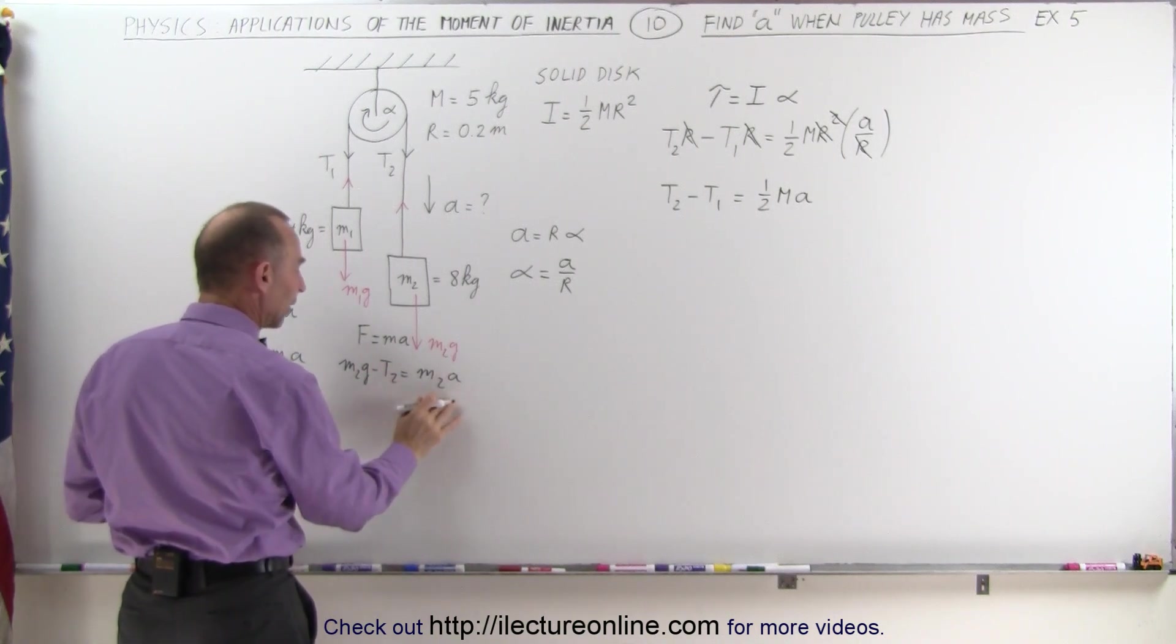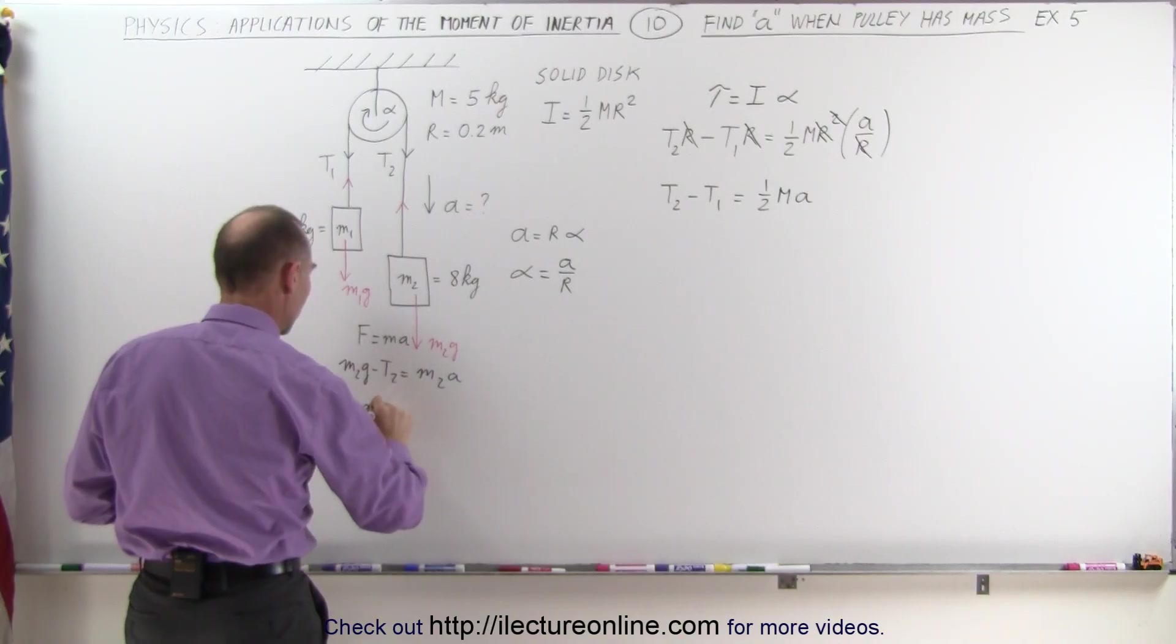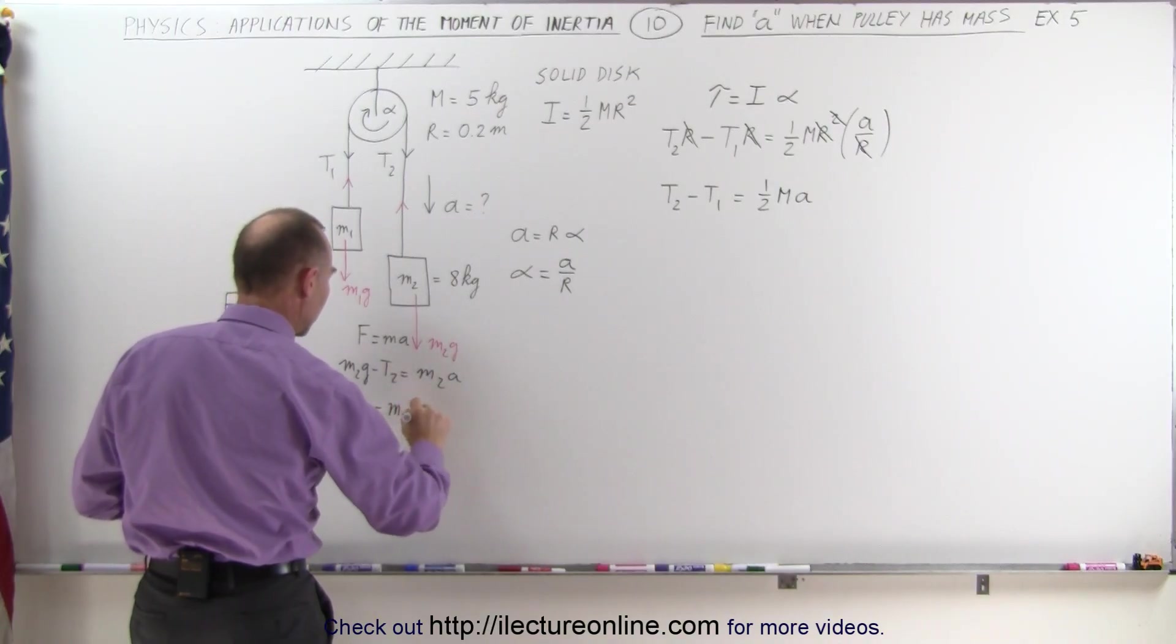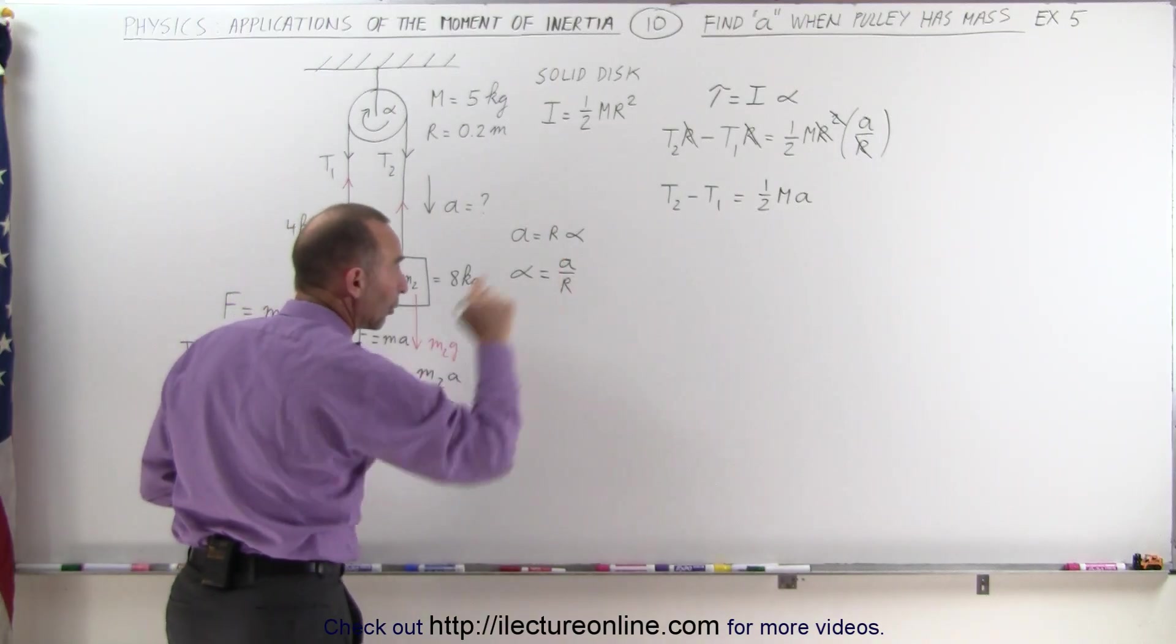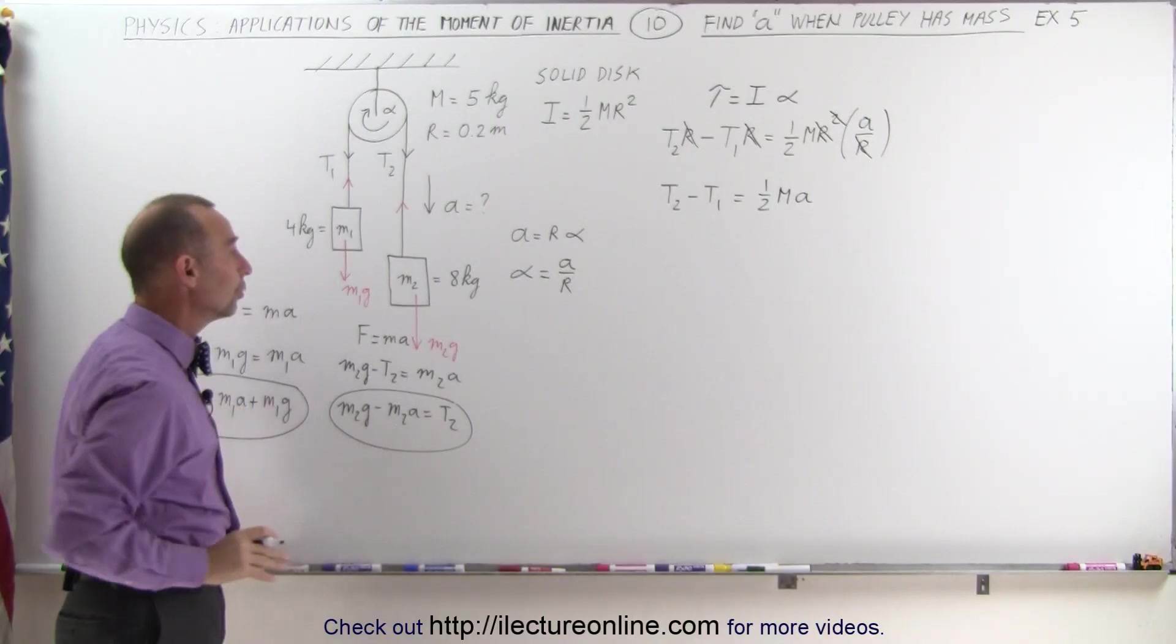Solving this for T2, I can move that to the other side, move this over here. We can say that M2G minus M2A equals T2, and that can then be substituted in the equation over there, eliminating both T1 from here and T2 with this equation.